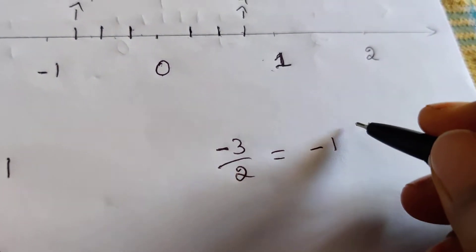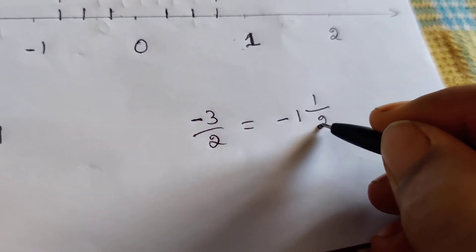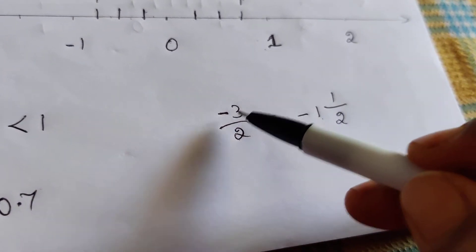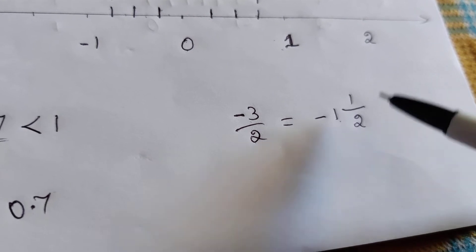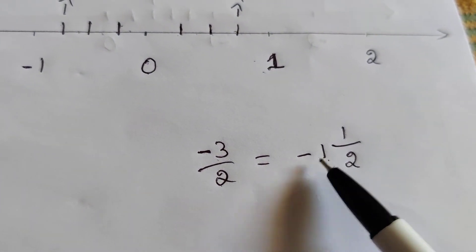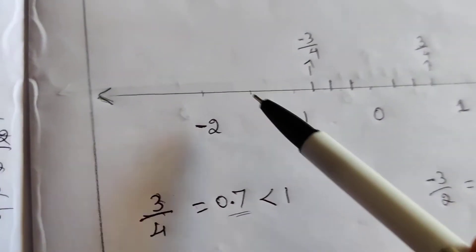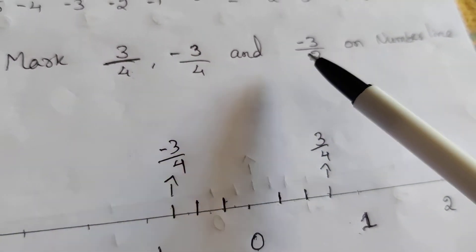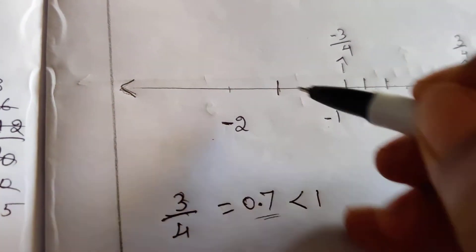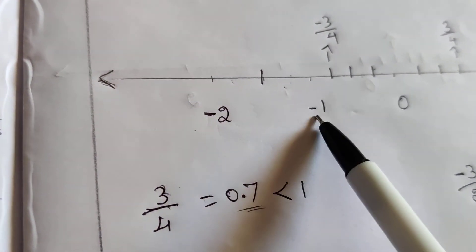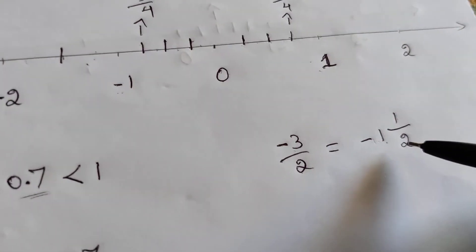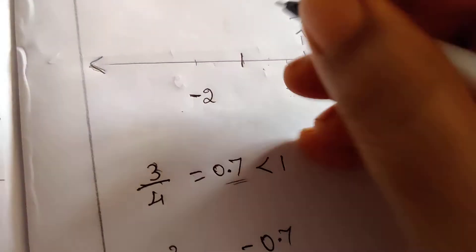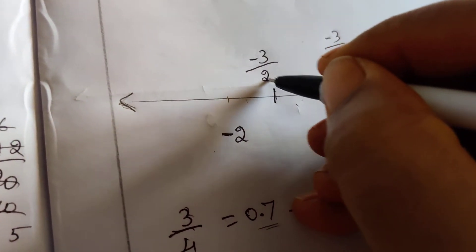Now let's find minus 3 by 2. In the second table, 1 times 2 is 2, plus the remainder 1. So it will be between minus 1 and minus 2. We will add the remainder number. So 2 equal parts give 1 line. Minus 1 will be 2 equal parts; the first line will be 1 line. This is minus 3 by 2. This is a rational number.